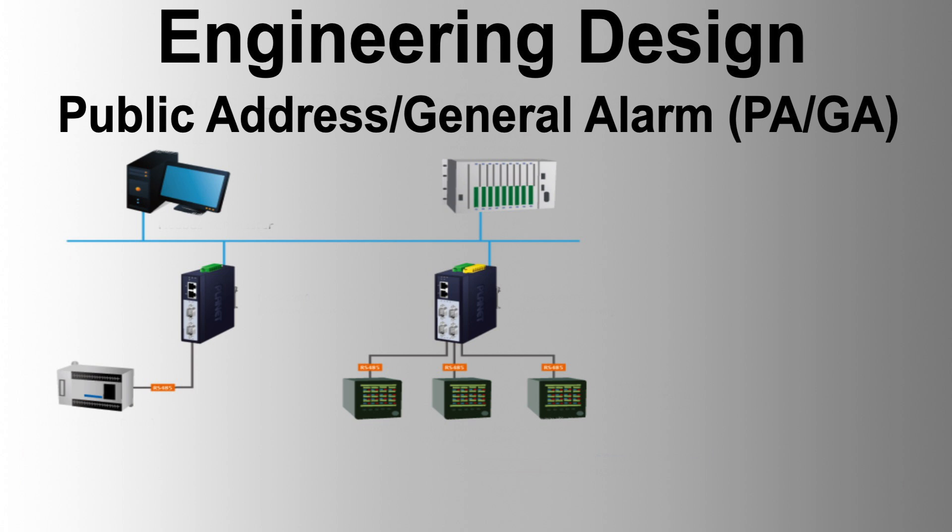PAGA loop design: system cabling is in a monitored loop design with status signals sent to the remote control room. Cables are laid separately for redundancy, minimizing the effects of cuts or shorts. Amplifiers and critical subsystems are in N+1 redundant configuration with automatic switching.